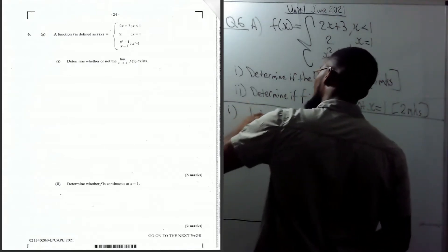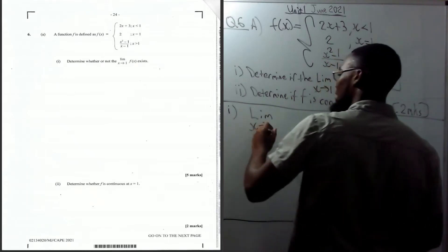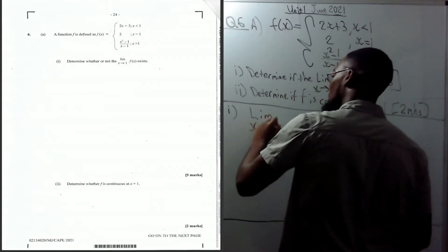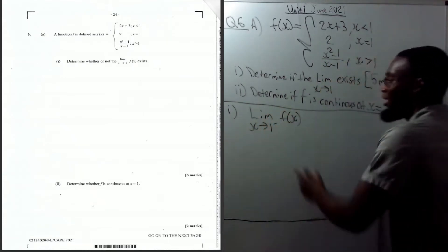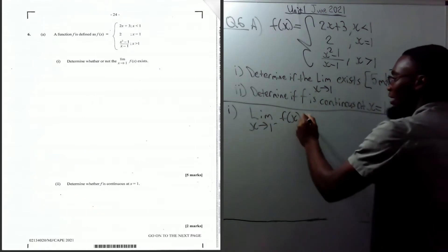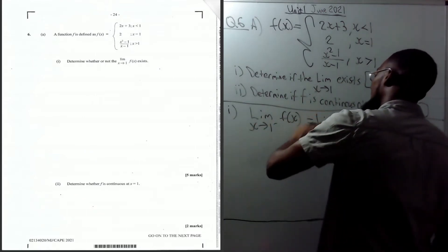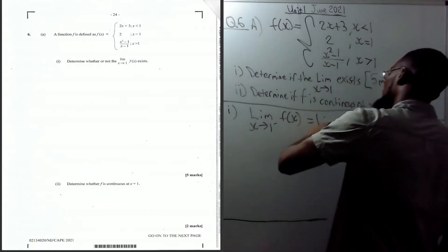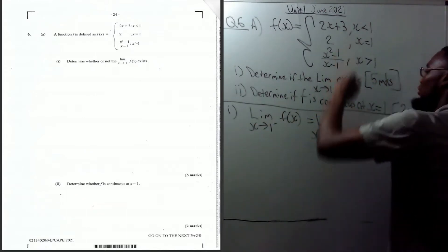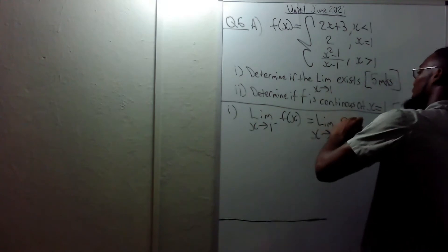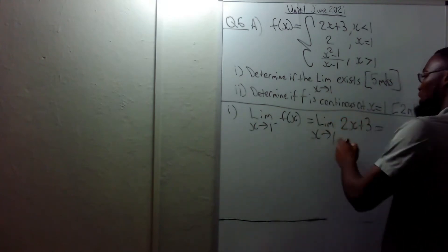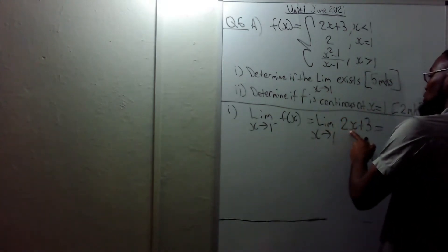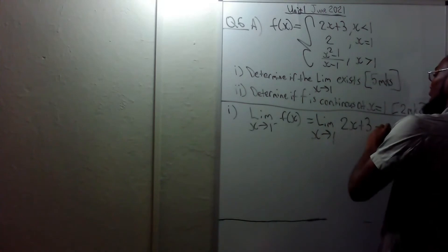We need to check if the limit from the left — the limit as x approaches one from the negative side of f(x) — equals the limit as x approaches one of 2x + 3. Plugging in one: 2 times 1 is 2, and 2 plus 3 is 5.